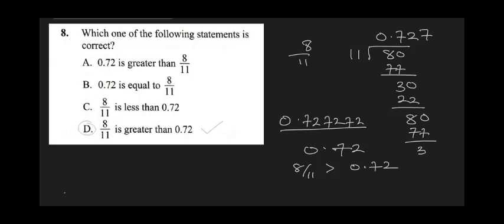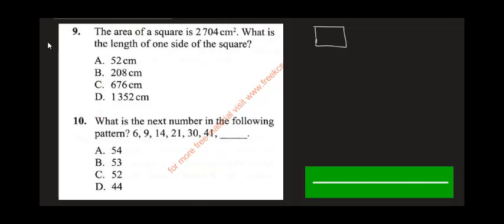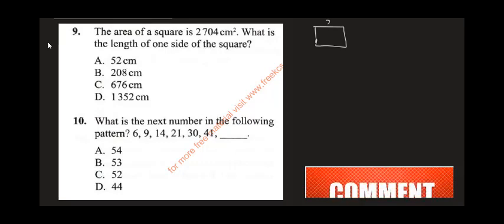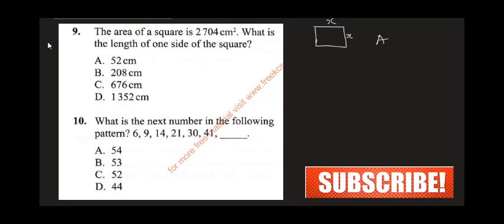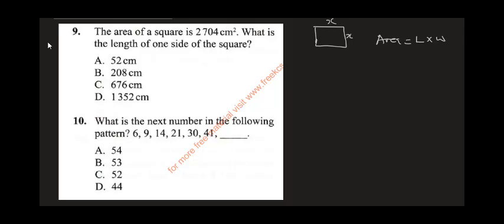Question 9 says: the area of a square is 2704. What is the length? Now, a square has all sides the same size. The area is length times width. Since it's a square, that means the area equals L squared.